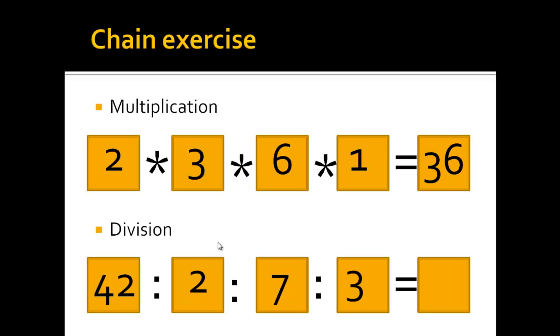Or as divisions, so 42 divided by 2 is 21, divided by 7 is 3, and 3 divided by 3 is 1, so the result here is 1.